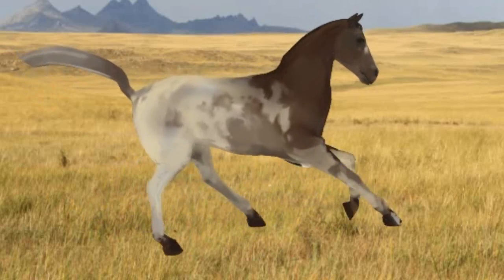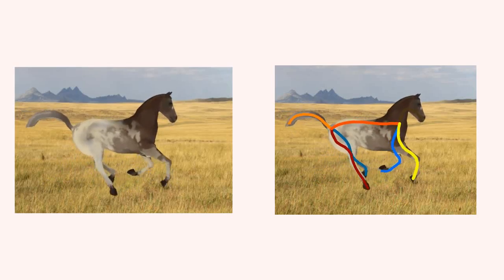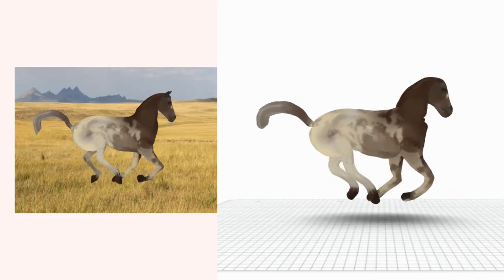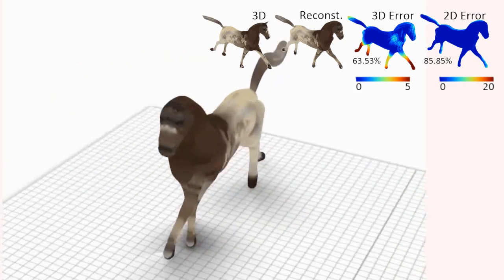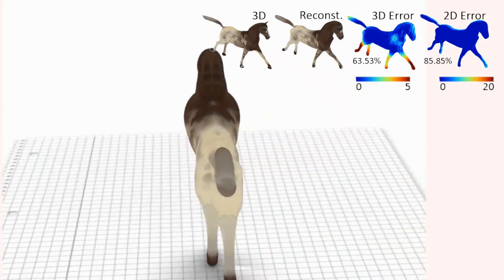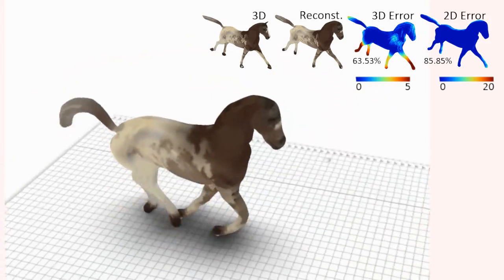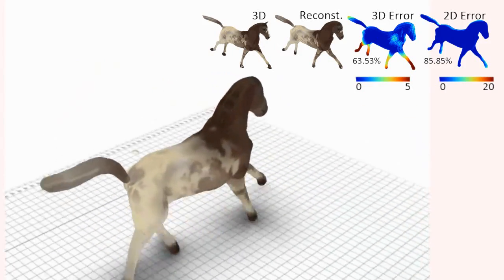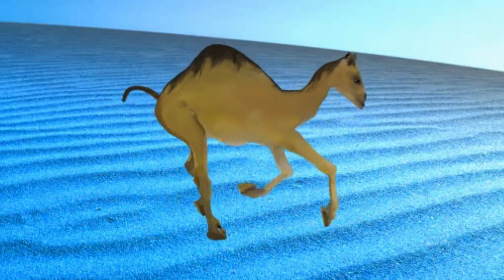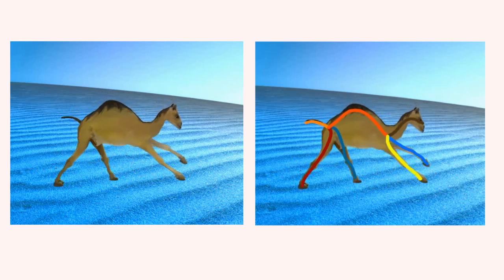Furthermore, we reconstructed previously virtual scenes such as this famous horse animation to compare our reconstruction to a reference. Note how the original 3D shape is reconstructed to be similar to the reference. The error analysis according to different metrics is shown in the paper. We do the same for a well-known camel sequence.